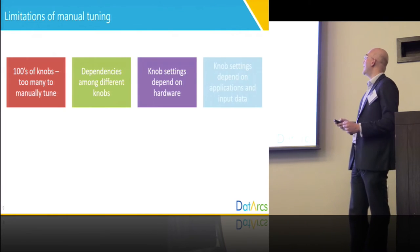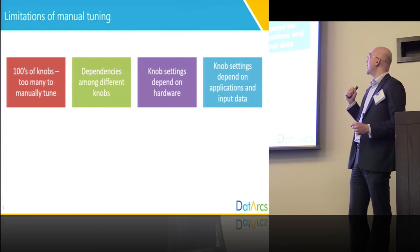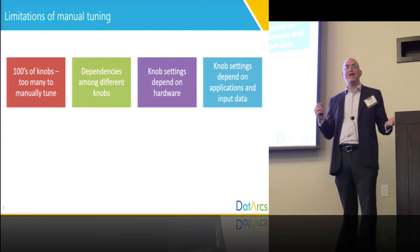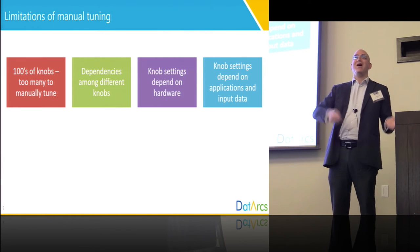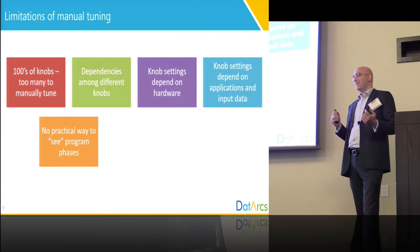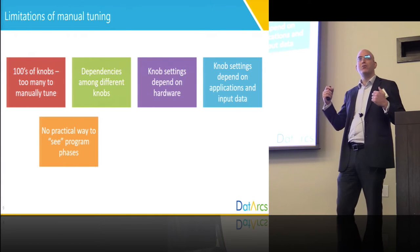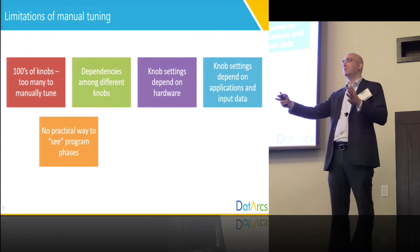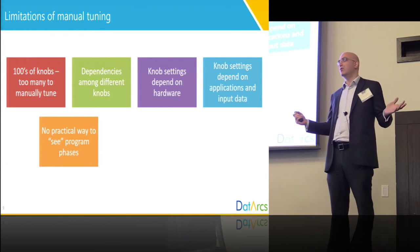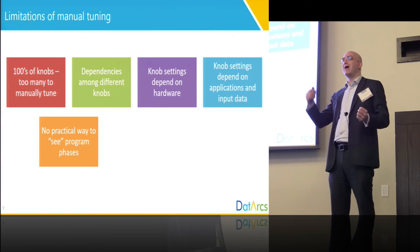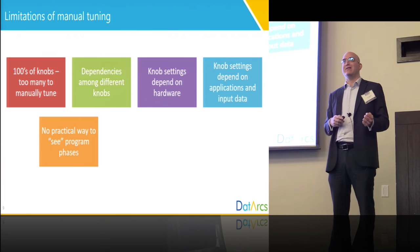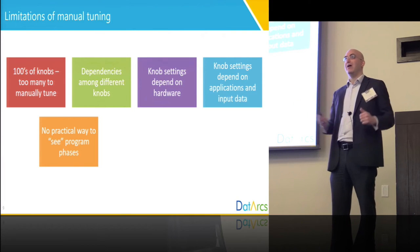There are a lot of performance cliffs in this area. The knob settings are really dependent on the application — if you change the application, you have to retune again. And as we discussed, there is no practical way to see within program phases. So if you're doing manual tuning, even if you have all the time and resources in the world, you're still tuning for the average case and not taking advantage of dynamic phases.